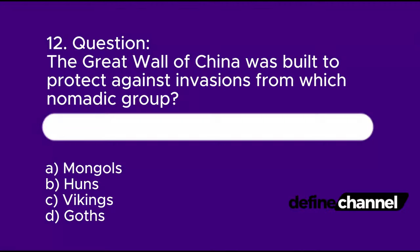Question 12: The Great Wall of China was built to protect against invasions from which nomadic group? A. Mongols, B. Huns, C. Vikings, D. Goths. Please determine which is the correct answer.